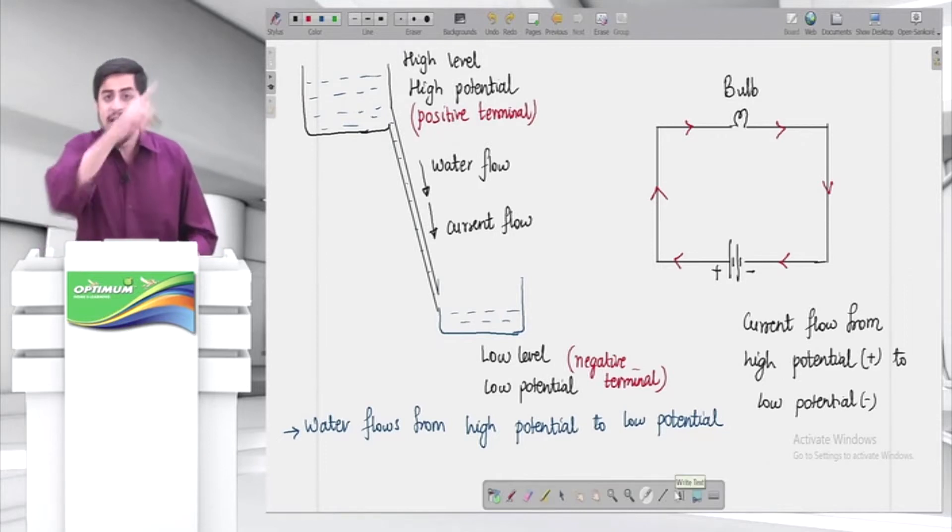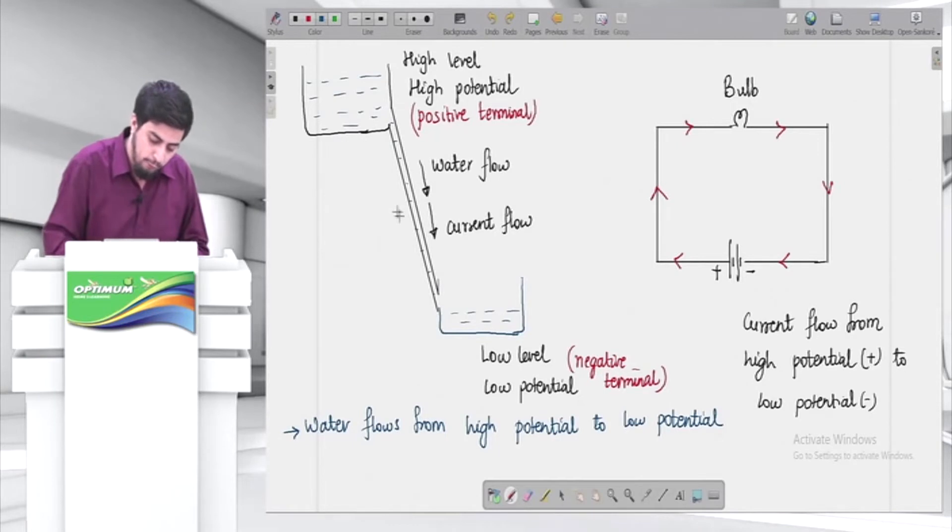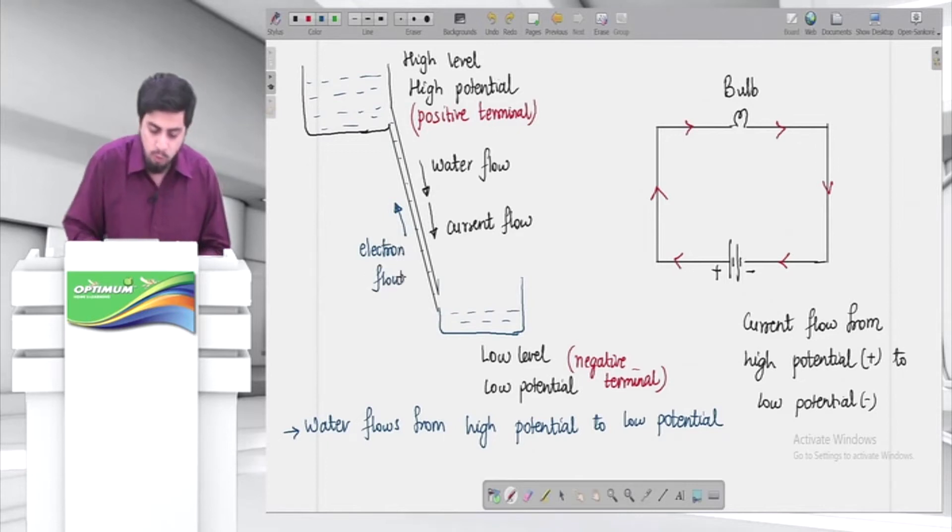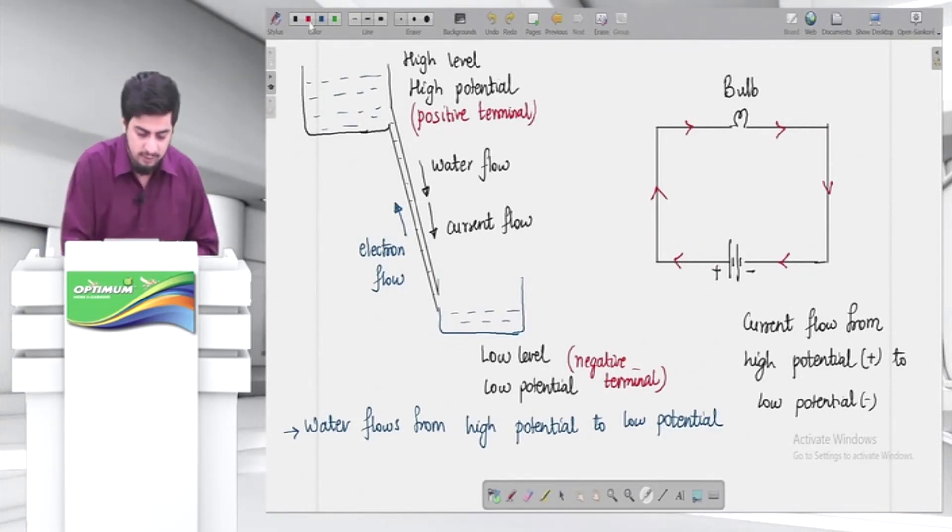Remember one thing guys, jo current ka flow hota hai na, opposite to that will be the direction of flow of electrons. So if current is flowing from positive terminal to negative terminal, high potential to low potential, electrons will flow opposite, that is they will flow from low potential to high potential. Very interesting thing, opposite direction. Conventional current is always opposite to the direction of flow of electrons. So if in the circuit current is flowing like this, then the electrons will flow in the opposite fashion. They will start from the negative and they will go on to the positive. Because what I am showing you, I am just showing current now. You can understand what exactly happens to my electrons.